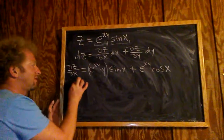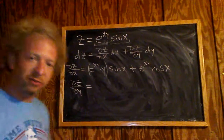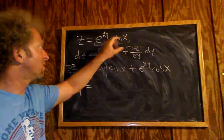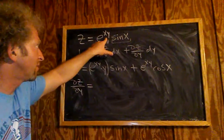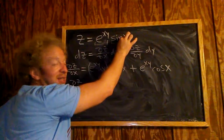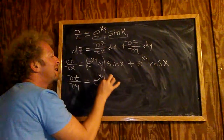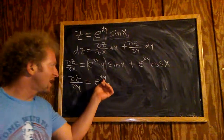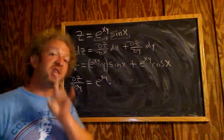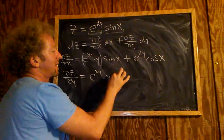The next derivative, ∂z/∂y, should be easy. When taking the derivative with respect to y, sine x is a function of x only, so we treat it as a constant — it hangs out. We don't have to use the product rule this time because sine x has no y in it. The derivative of e to the xy is e to the xy times the derivative of the inside with respect to y. The derivative of y is 1, so we get x times 1, which is simply x. We have sine x hanging out in front.